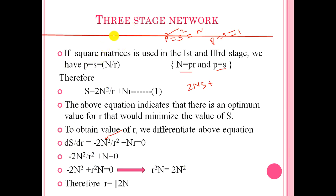By substituting n equals p×r and p equals s into our expression, we get the total switching elements S equals 2n squared over r plus nr. This is equation number one. This equation indicates that there is an optimum value of r that would minimize S. Since r appears in both the denominator and numerator, the value of r must be optimized to minimize the total number of switching elements.